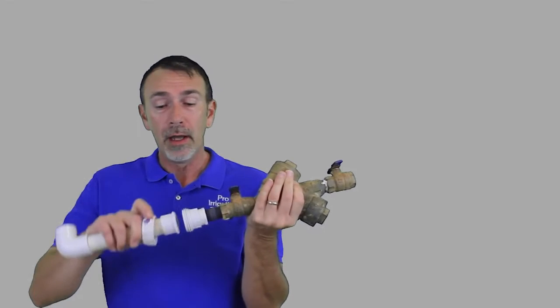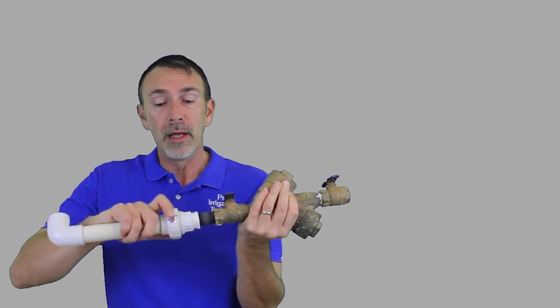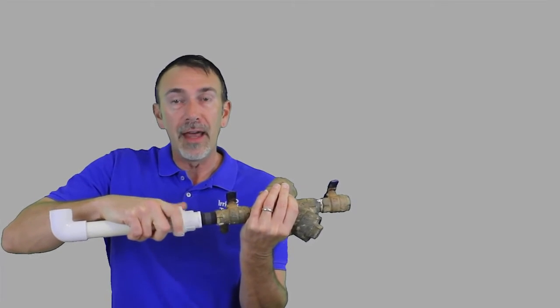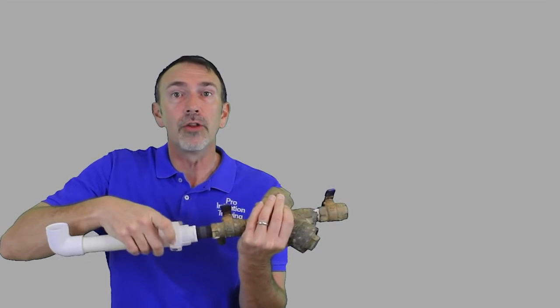There's a number of different devices that we would want to disconnect on. A backflow preventer is one of them. A lake pump, pulling water out of the lake, that's one of the things that can freeze over the winter.